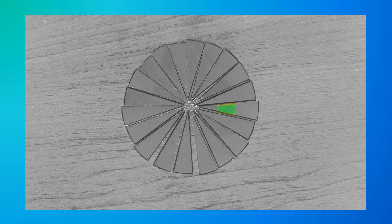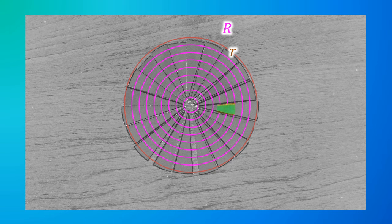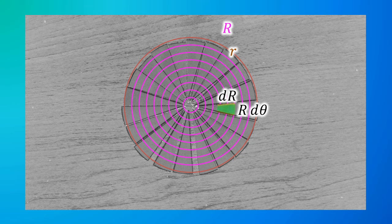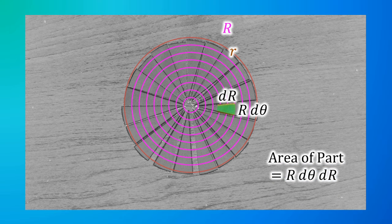Now let's talk about another way to get to that integral. Assume that we have an infinite amount of rectangles instead of a finite amount, focusing on one rectangle that applies to all others. Let's call all the radii from inside to outside capital R, and the radius of the circle lowercase r. We mark dR for the change in the radii, since each rectangle is infinitesimally small. This gives a width of R·dθ based on the definition of radians. As we get more and more smaller green parts, they become closer and closer to a rectangle. So the area of one rectangle is R·dθ·dR.